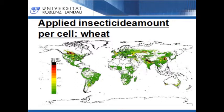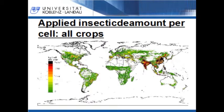The map shown in this slide was generated by multiplying the area grid with the application rate grid. This can be done with the raster calculator which is implemented in GIS. The cell attributes represent the annual applied insecticide amount in kg per cell in wheat cultivation. Red and black areas represent high applied insecticide amounts. A grid representing the total amount per cell can be created by summing up the applied amount grids for all crop groups. In this slide, you can see the created total amount grid. Areas with a high applied amount are colored in black and red. Large areas with a high applied insecticide amount are illustrated in China and India.